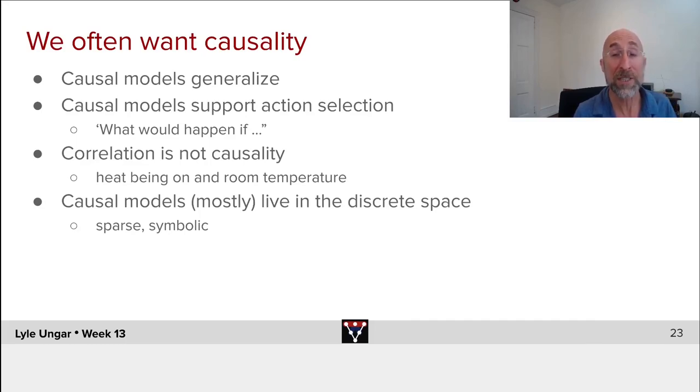Causal models generalize. That's why physics works so well. It's always the case. Correlations can change from year to year. But if you have a good causal model, this causes this to happen—sort of by definition that will generalize to different settings, different cases, different times.